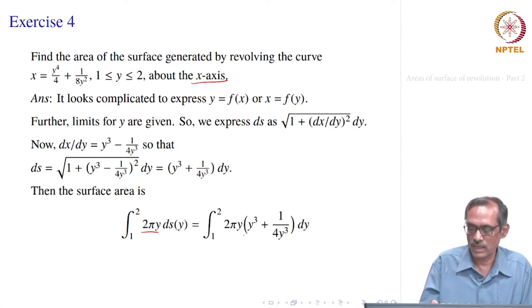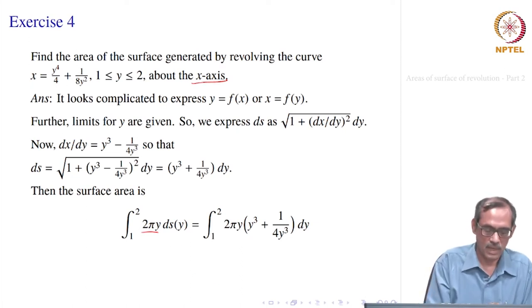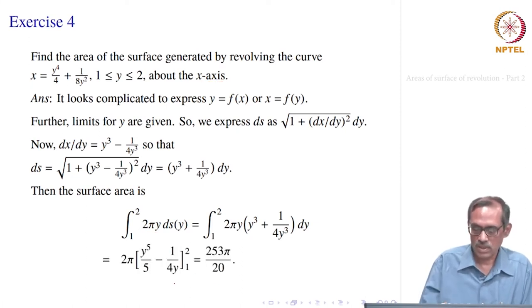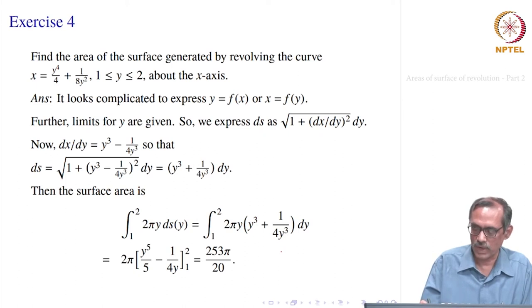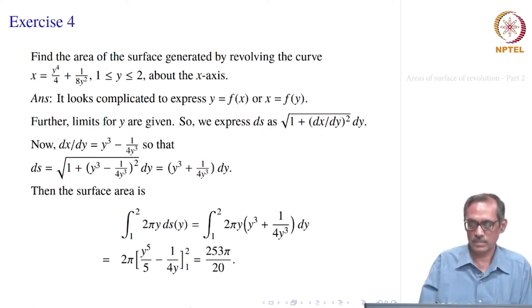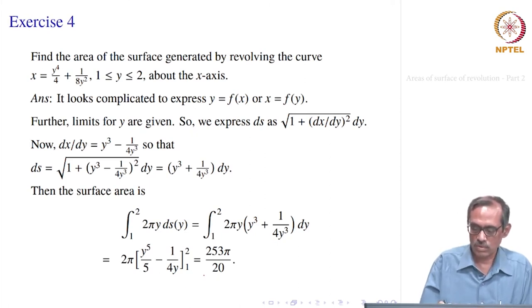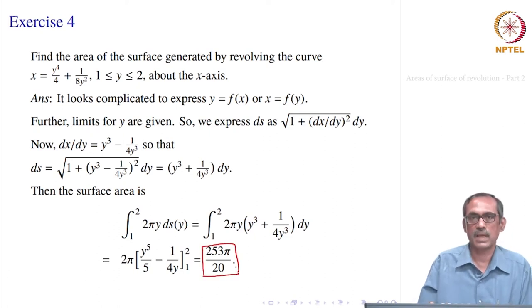The surface area is ∫₁² 2π·y·(y³ + 1/(4y³)) dy = ∫₁² 2π·(y⁴ + 1/(4y²)) dy. Integrating: y⁵/5 - 1/(4y), evaluated from 1 to 2, and simplifying gives 253π/20.